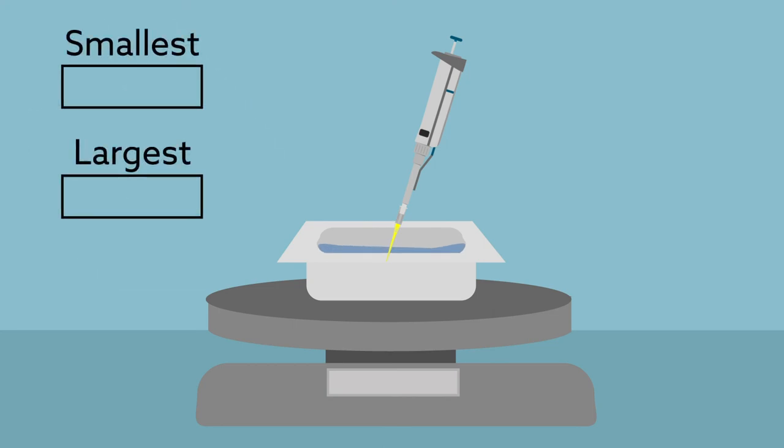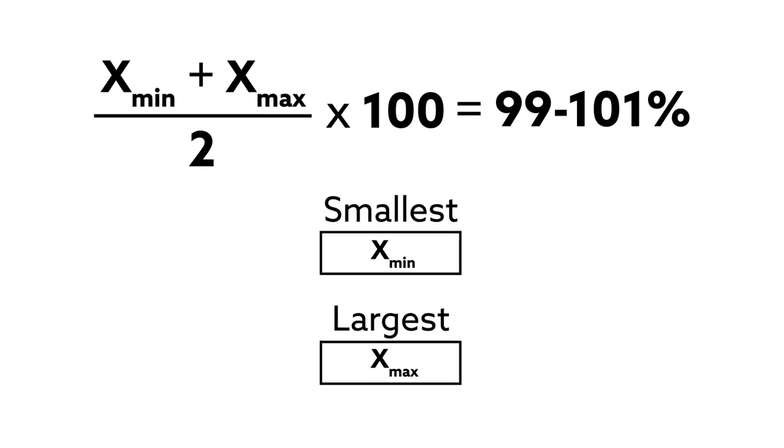Weigh the largest and smallest amounts the pipette can dispense. Calculate your results, then find the average and multiply by 10 to get accuracy. Aim for a value of 99 to 101%.